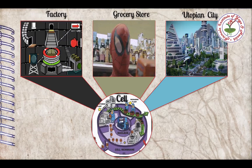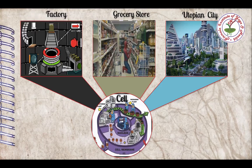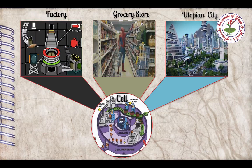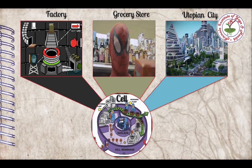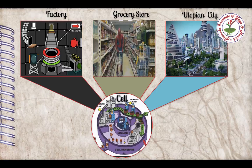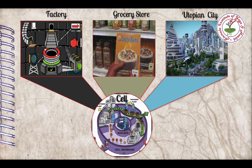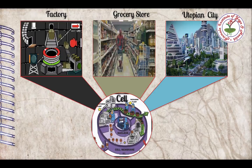Before moving ahead, just imagine this analogy which is much closer to Metabolism. Imagine a factory that manufactures hundreds of products by using raw materials, and this factory operates 24 hours a day and can speed up or slow down production at any moment according to the demand for its products. The factory generates only environmentally safe waste and can repair itself when the need arises.